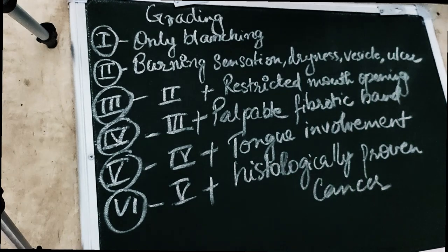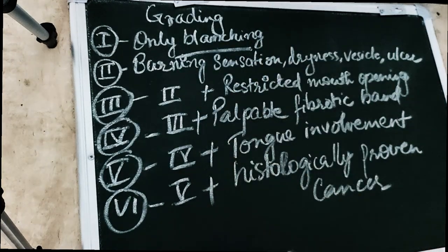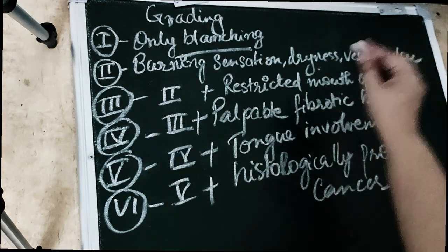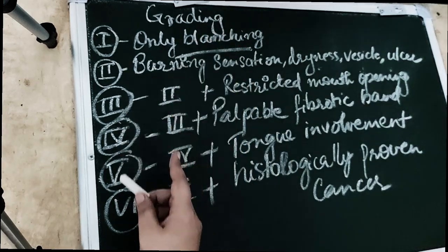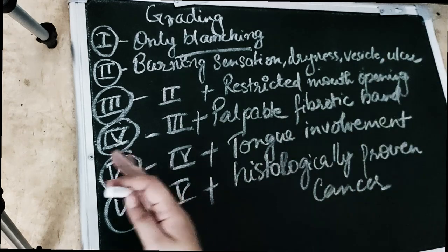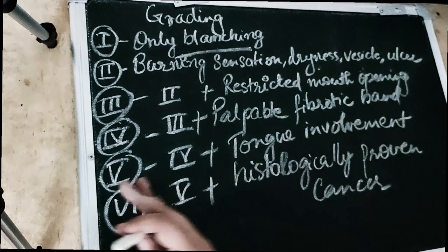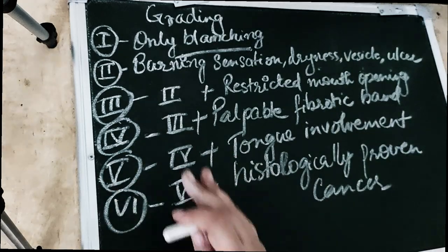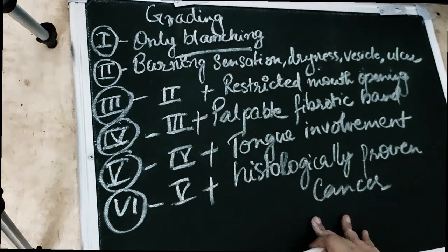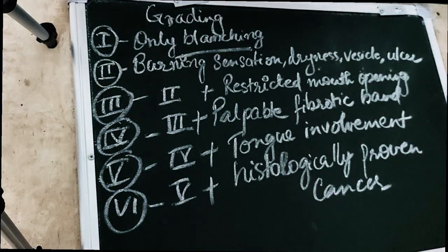Coming to the grades of OSMF: Grade 1 is blanching of mucosa only, without any symptoms. Grade 2 is burning sensation, dryness, vesicle and ulcer formation. Grade 3 is Grade 2 plus restricted mouth opening. Grade 4 is Grade 3 plus palpable fibrotic bands. Grade 5 is Grade 4 plus restricted tongue movement. Grade 6 is Grade 5 plus histologically proven cancer.